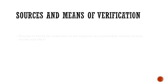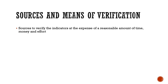You have to write the resources and means of verification — such as at what amount of time you can achieve that goal, outputs, outcome, and complete those activities. Similarly, at what cost and effort you can achieve that goal, outcome, outputs, and activities. Then you can see the resources and means of verification.